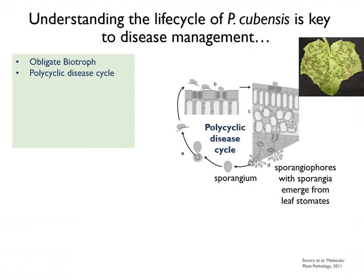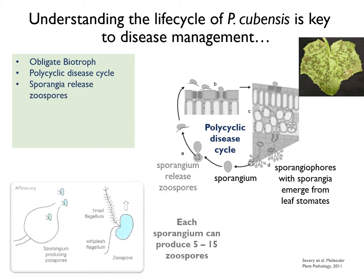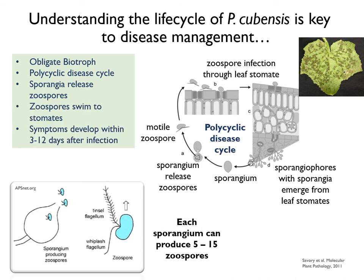P. cubensis has a polycyclic disease cycle, producing numerous sporangia that can be carried to nearby leaves on air currents. However, sporangia only serve as a vehicle. Each individual sporangium can release 5 to 15 zoospores on the leaf. Zoospores are motile spores that actually swim to natural openings called stomates on the leaf surface to infect the plant.